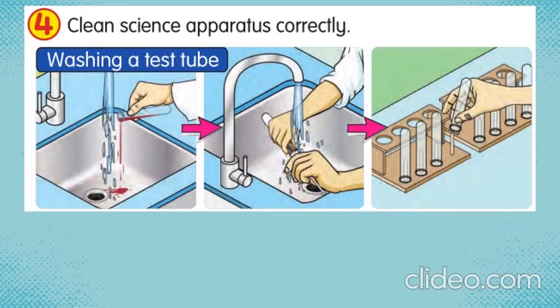Students, number 4: clean science apparatus correctly. For example, washing a test tube. For cleaning, you need to use clean water in the science lab. Usually, the science lab provides everything to clean science apparatus. Cleaning a test tube requires water and also a brush. Once you clean them they will be wet, so you need to dry them and place them at the designated area. For test tubes, they have test tube holders or racks.